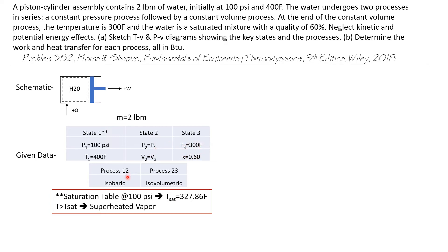What about state two? Starting back at state one, process one to two is an isobaric process, meaning constant pressure. So the pressure of state two equals the pressure of state one. The second process from state two to state three is an isovolumetric process, meaning constant volume. So the specific volume of state two equals the specific volume of state three. That gives us enough information to plot the states.